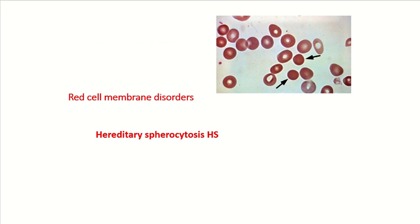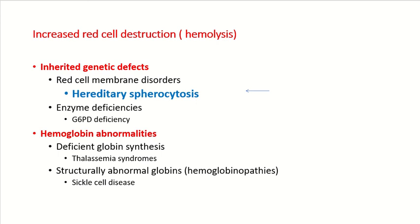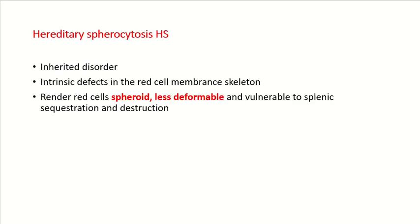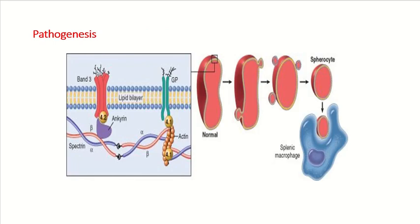Today we will start with hereditary spherocytosis. It is a hemolytic anemia with a red cell membrane defect. This is an autosomal dominant disorder. There is an intrinsic defect in the red cell membrane skeleton which renders the cells spheroid — they become less deformable, leading to splenic sequestration and destruction. The basic skeleton framework consists of two spectrin chains, alpha and beta, which combine with other chains. They combine with ankyrin, forming horizontal and vertical interactions that lead to stability of the RBCs.